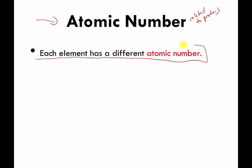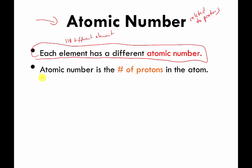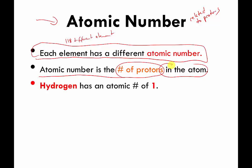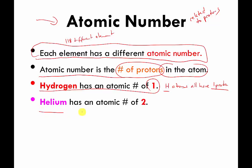Every element — and there are about 118 different elements or different types of atoms — every element has a different atomic number. The atomic number is the number of protons in an individual atom. For example, hydrogen has an atomic number of one, meaning all H atoms have one proton. Helium has an atomic number of two.